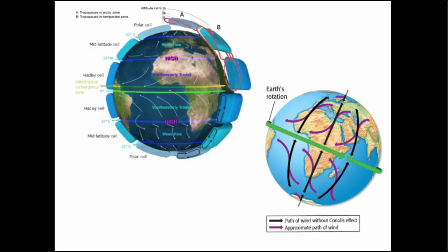Then we have the polar easterlies. They're not labeled but they would be down here and up here.